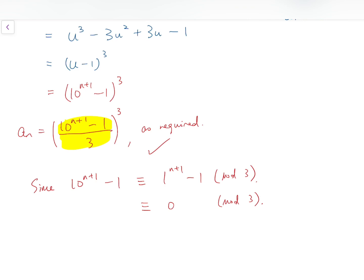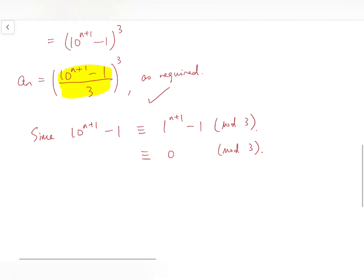We know that 10 is a number with remainder 1 when it's divided by 3. So no matter how many times we multiply this number, the remainder is still 1. And then we minus 1, and the remainder becomes 0. So that means this number is a multiple of 3.